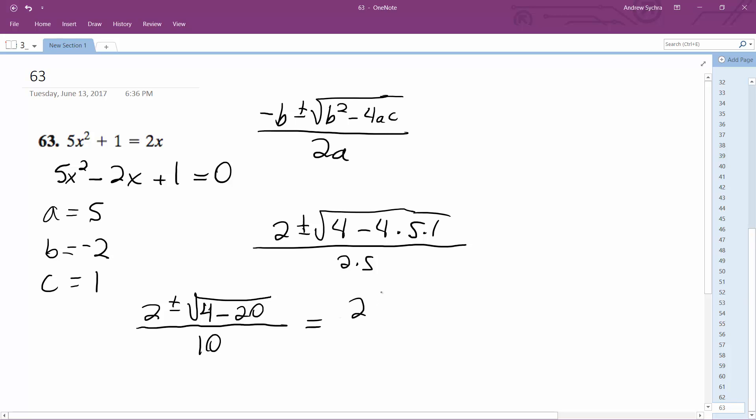This equals 2 plus or minus the square root of negative 16, all over 10. So what we end up with is 2 plus or minus 4i over 10.